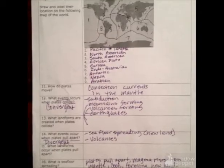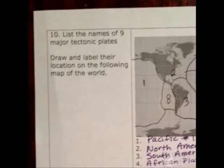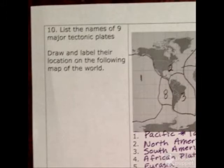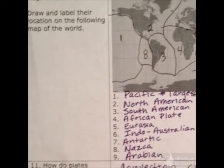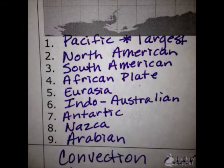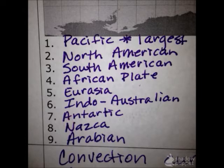Here's the next page. It says: list the names of the nine major tectonic plates. They are: Pacific — the largest plate; North American; South American; African; Eurasian; Indo-Australian; Antarctic; Nazca; and Arabian. That's the Saudi Arabian region that has its own plate.